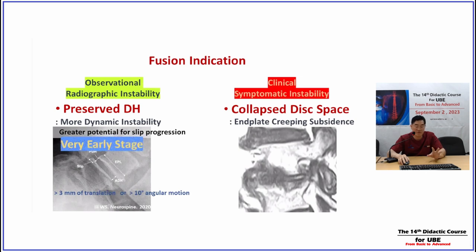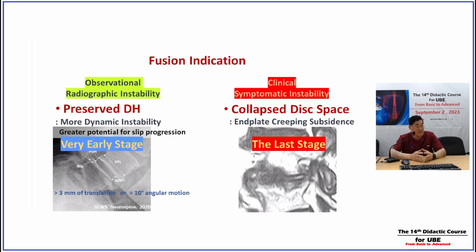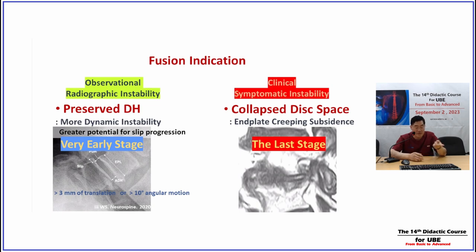So the buttock and radicular pain can be solved, but due to buttock pain the patient cannot walk long distances — only five minutes of walking or standing, then they must stop and sit due to referred pain. We normally talk about radiographic observational instability with hyper-motion, but hyper-motion happens in a very early stage of degeneration. Every review paper says it happens early, degeneration presses down, the facet stabilizes, motion decreases, and only decompression is needed — not fusion. But clinical symptomatic instability happens at the last stage of degeneration.